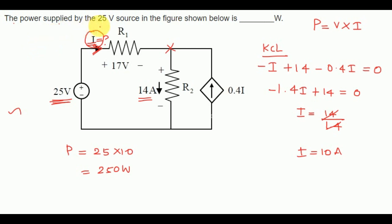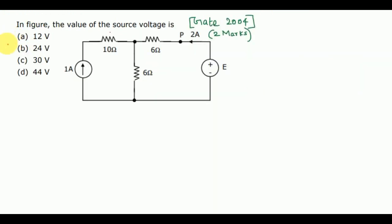So the power supplied by the 25 volt source is 250 watts. Now let us solve the third problem. The value of the source voltage is to be found from 4 given choices, and a circuit diagram is given. In this circuit diagram there is only one voltage source, so we want to calculate the value of the voltage of this source.